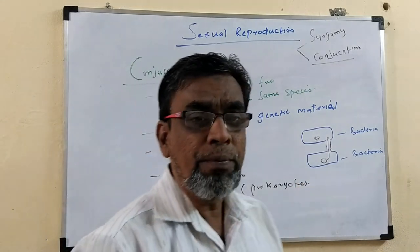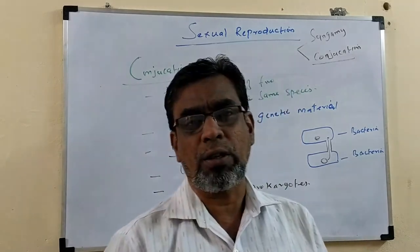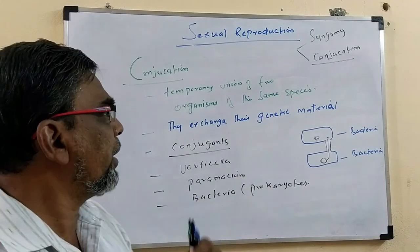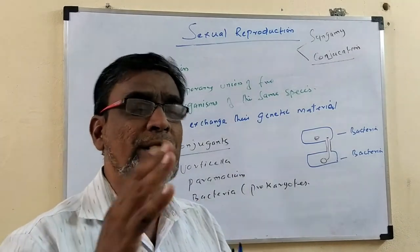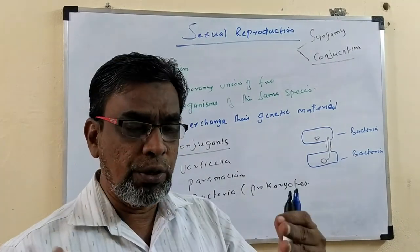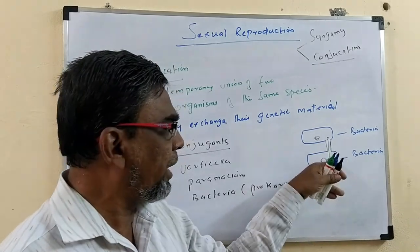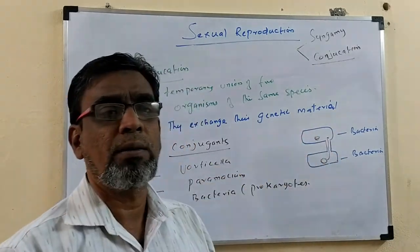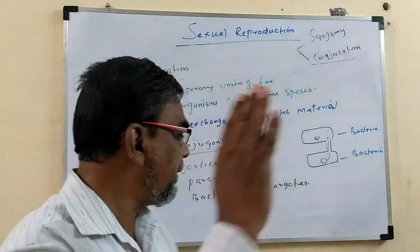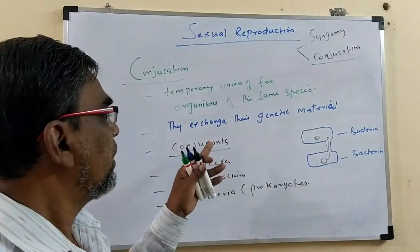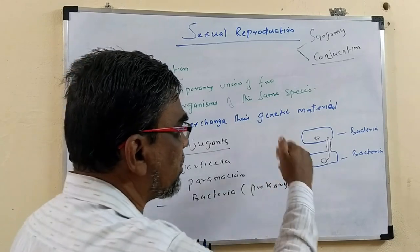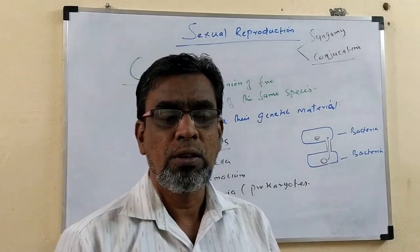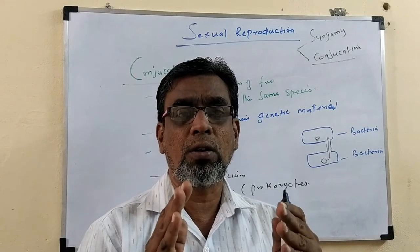Once again, conjugation is a sexual reproduction — nothing but the temporary union of two organisms of the same species. During this union, the genetic material will be exchanged to the other bacteria, paramecium, or vorticella. The organisms involved in this conjugation process are called conjugates. This is conjugation.